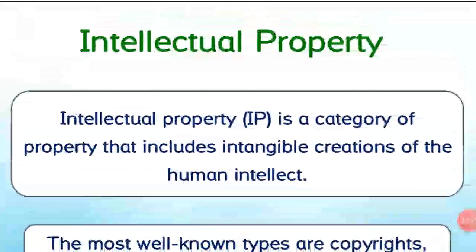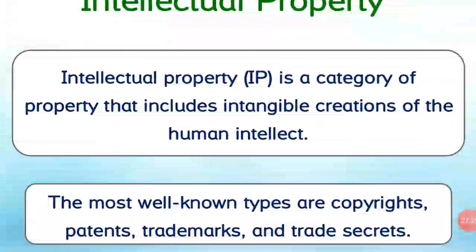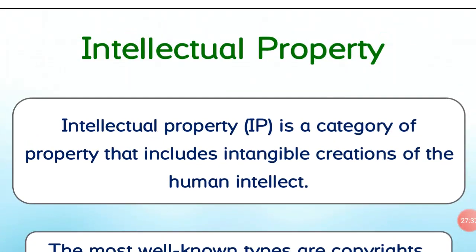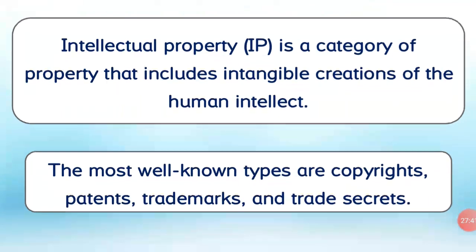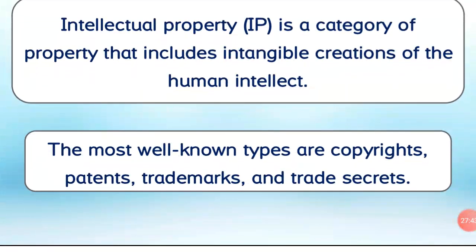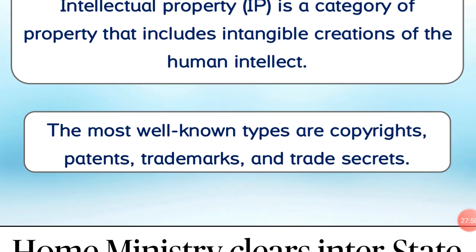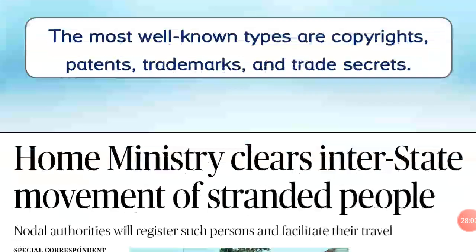Coming to what intellectual property is: it is a category of property that includes intangible creations of the human intellect. The different types of intellectual property are copyrights, patents, trademarks, and trade secrets. Try to remember and understand the differences between each type of intellectual property, and share your answers in the comment section below.